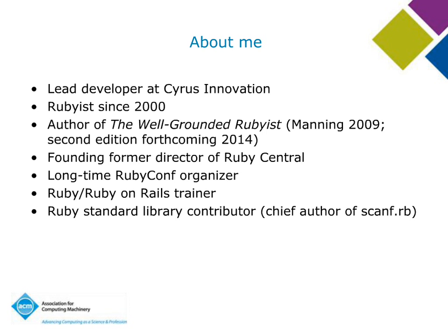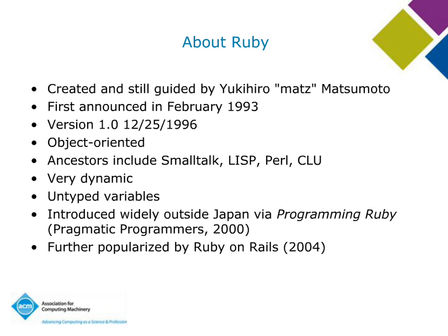Ruby was created and is still developed and guided by Yukihiro Matsumoto, generally known as Matz. He first announced Ruby in February of 1993, so we're looking at Ruby's 21st birthday recently. The first version 1.0 of Ruby was released on Christmas in 1996, and that started a tradition of Christmas releases of Ruby versions, which still goes on to this day. Ruby is an object-oriented, general-purpose programming language. It is sometimes referred to as a scripting language, though it is a full programming language. It's interpreted. Ancestors include Smalltalk, Lisp, Perl, and CLU.